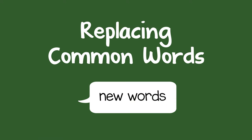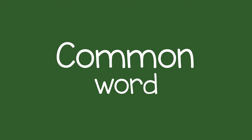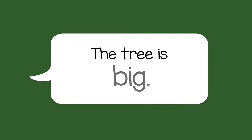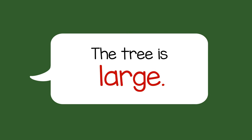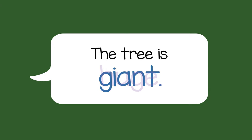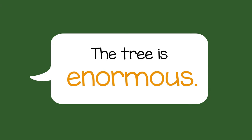You can introduce new words to a child when you speak to them. Instead of using a common word to describe something, you can use a similar word that might be new to the child. For example, instead of saying that a tree is big, you could say that it is large, or huge, or giant, or enormous.